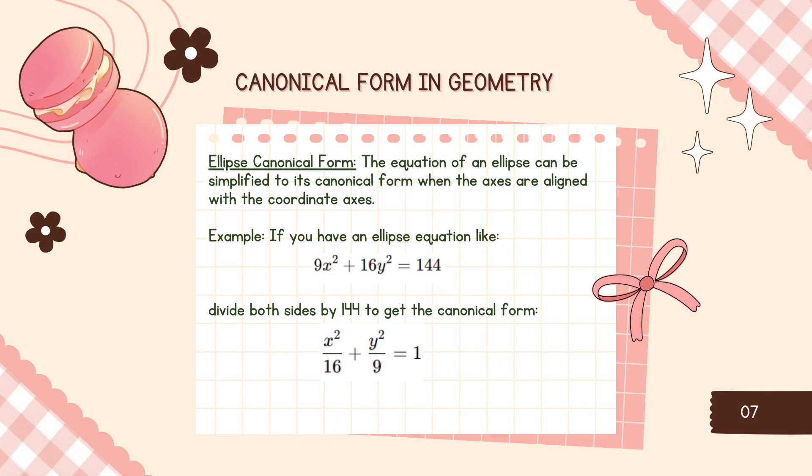Next is canonical form in geometry, ellipse canonical form. The equation of an ellipse can be simplified to its canonical form when the axes are aligned with the coordinate axes. Example: if you have an ellipse equation like 9x squared plus 16y squared equals 144, you divide both sides by 144 to get the canonical form, which is x squared over 16 plus y squared over 9 equals 1.